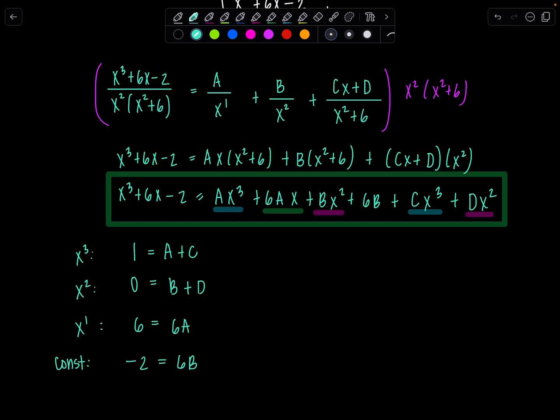So right off the bat, from the last two equations, I know A is equal to 1, B is equal to negative one-third, and then if I come back and substitute those results in, if A is 1, 1 equals 1 plus C, so C is 0, and then B is negative one-third, so that means D is going to be positive one-third. Perfect.